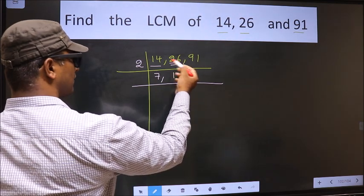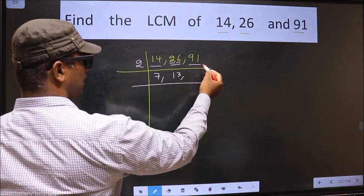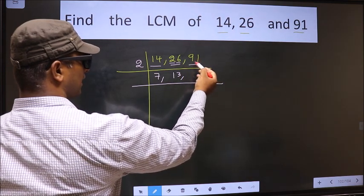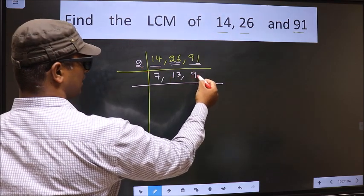The other number 6, when do we get 6 in 2 table? 2 times 3 is 6. The other number 91, last digit 1, not even. So this number is not divisible by 2. So we write it down as it is.